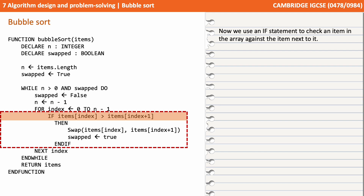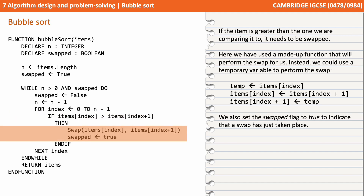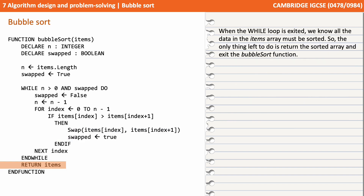We use an if statement to check an item in the array against the next item in the array. If the item is greater than the one we're comparing it to, it needs to be swapped. Here we've used a function called swap which will perform the swapping for us. We could also use a temporary variable to perform a three-stage swap doing exactly the same thing. We also set our swapped flag to true to indicate that we've just performed a swap. Once the while loop is exited, all of the data items in the array will be sorted, so the only thing left to do is return the sorted array and exit our bubble sort function.